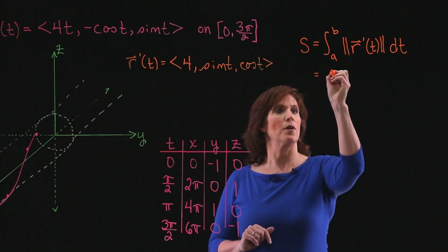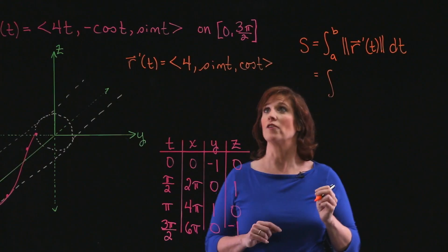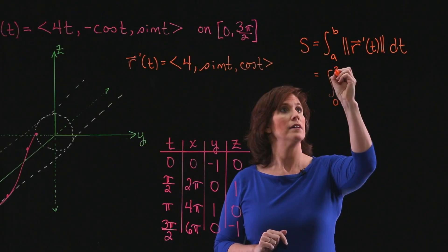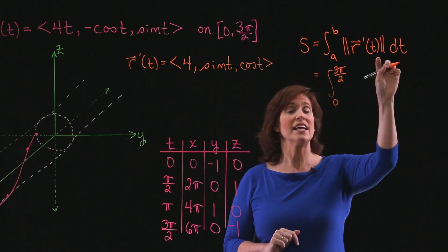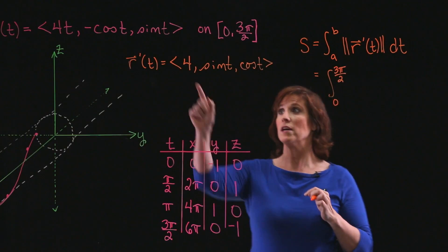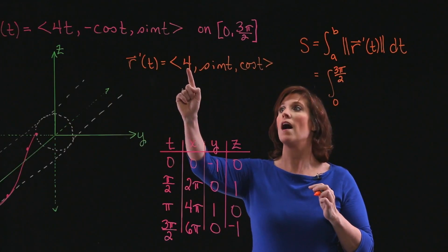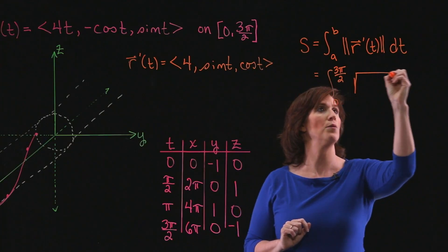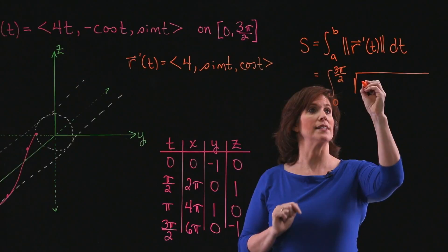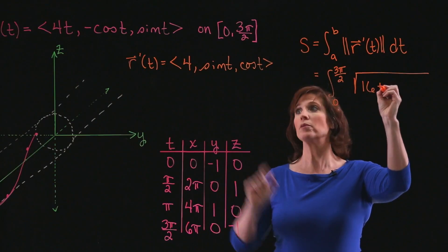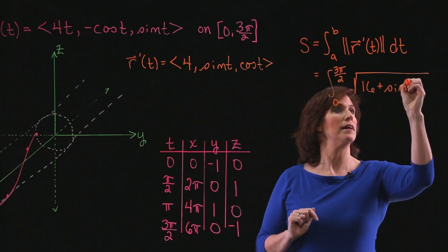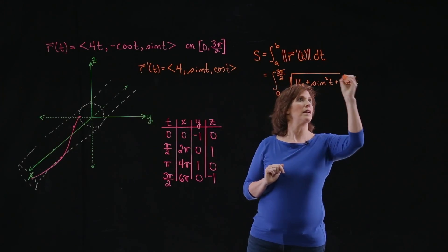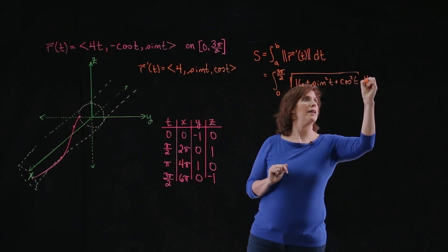So let's fill this into our formula. Limits of integration: I want to find the arc length from 0 to 3π/2. The next piece is the norm of r-prime. To find the norm of r-prime, I need to take the sum of the squares of each of those components and take the square root of that. So the square root of 4 squared, which is 16, plus sin²(t), plus cos²(t), dt.